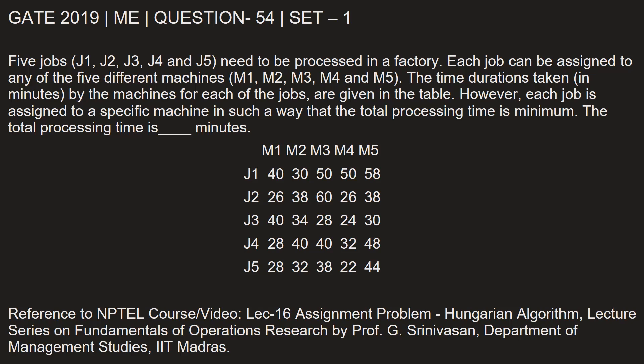Five jobs need to be processed in a factory. Each job can be assigned to any of the five different machines M1, M2, M3, M4 and M5. The time durations taken in minutes by the machines for each of the jobs are given in the table. Each job is assigned to a specific machine in such a way that the total processing time is minimum. The total processing time is blank minutes.